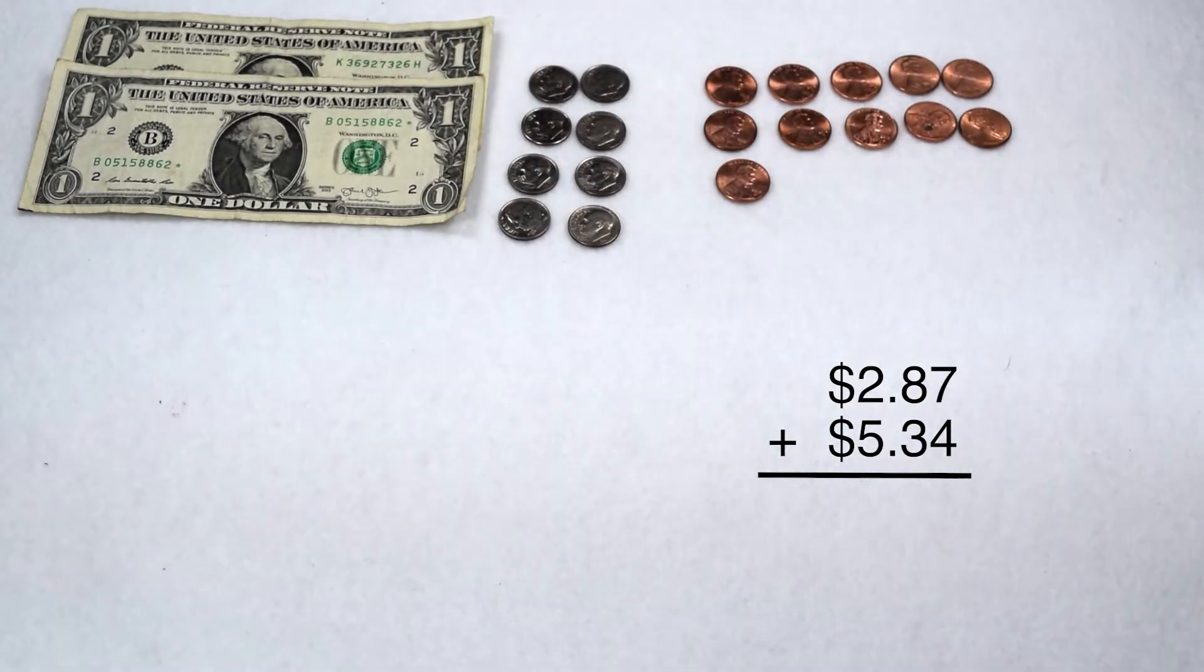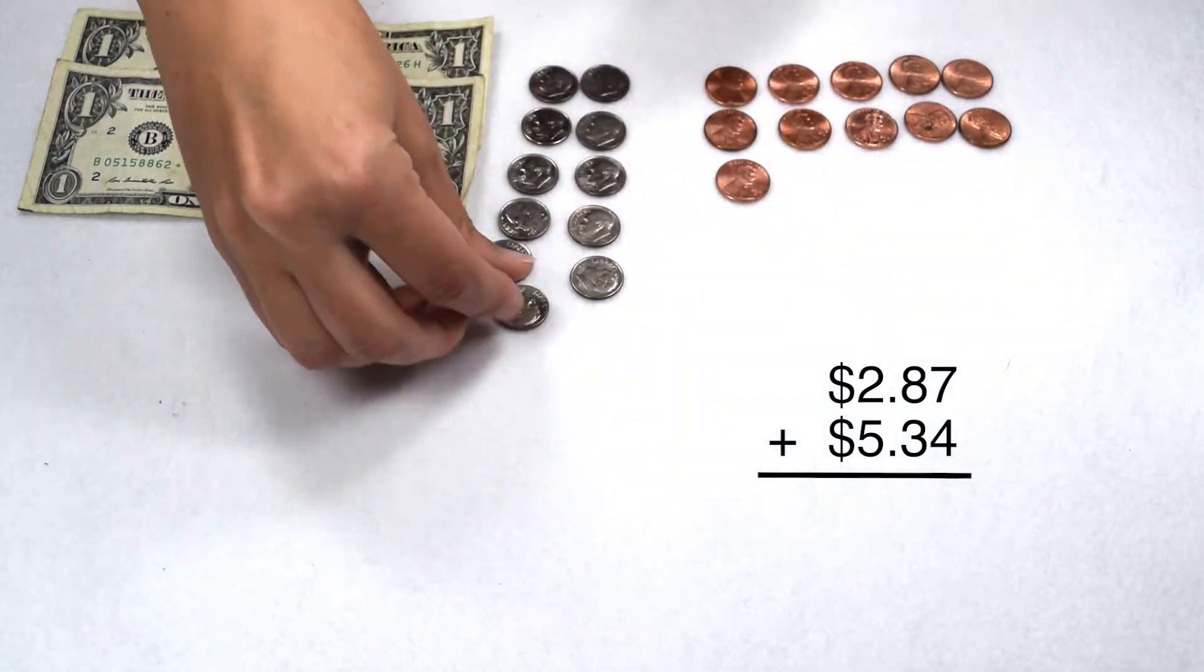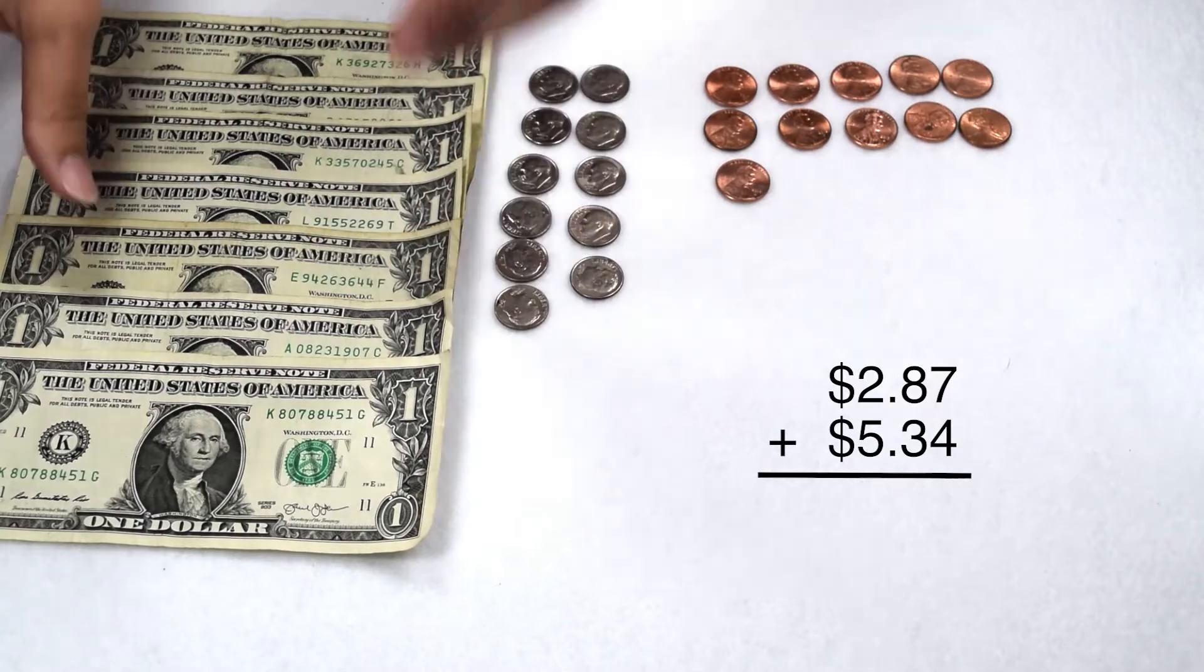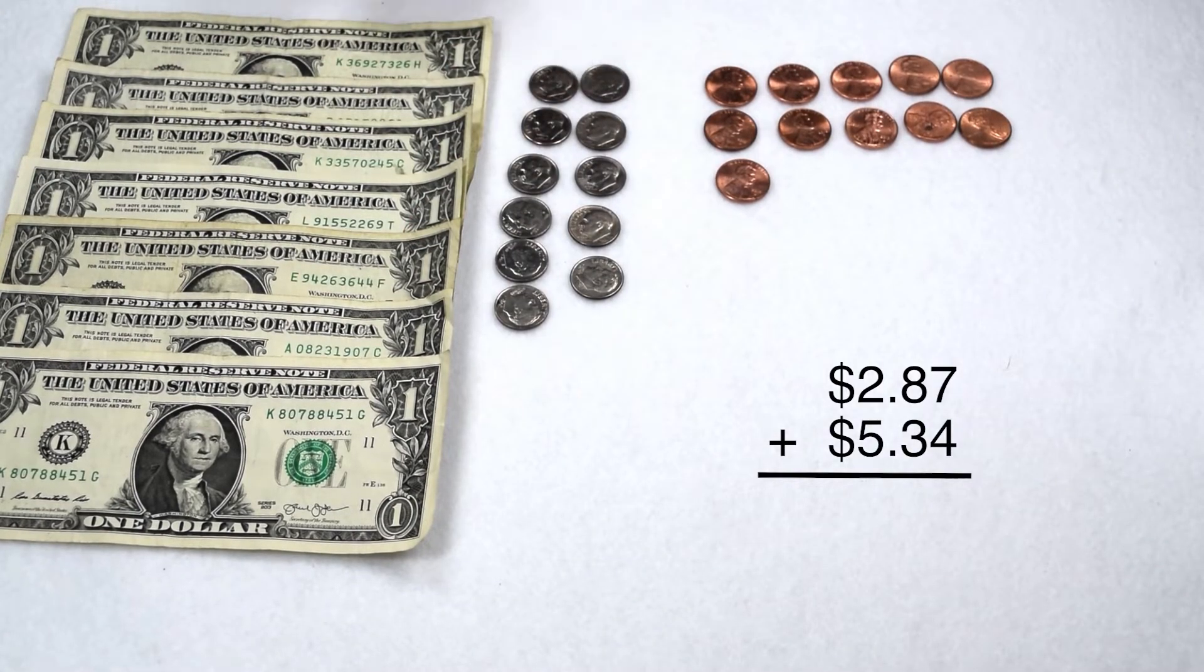With my dimes, I have eight dimes, and I'm going to add three more. And then to my dollars, I have $2, and I'm going to add five more. So now I have a total of 11 pennies, 13 dimes, and $7.